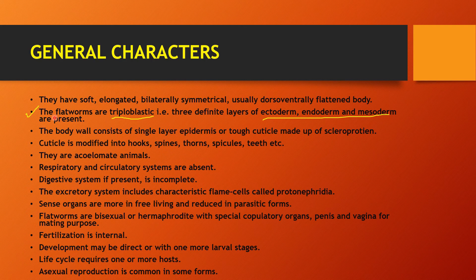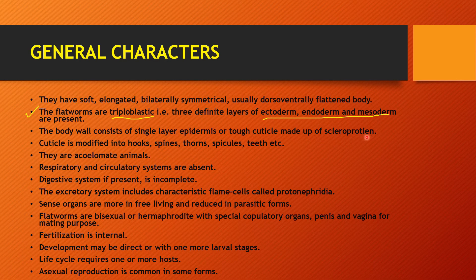If you have seen my first video on Phylum Cnidaria, we learned that cnidarians are diploblastic. But as we move to Platyhelminthes, they are triploblastic — they have 3 germinal layers: ectoderm, endoderm, and mesoderm. Their body wall is a tough cuticle which is a scleroproteins, which is modified into hooks, spines, thorns, and teeth. These are adhesive organs.